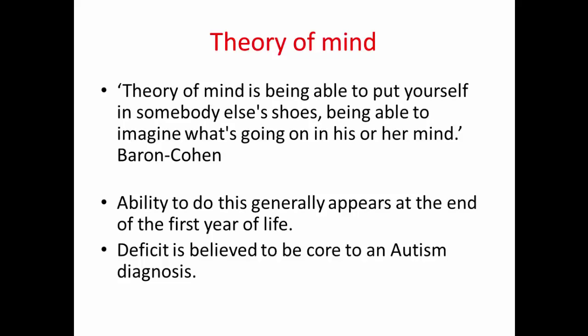For people with normal theory of mind development, you'd expect the ability to do this to start to appear at the end of the first year of life. It goes on to develop and become more complex as the child matures, but Baron-Cohen argues that theory of mind never becomes as fully developed in individuals with autism as it does in those without.